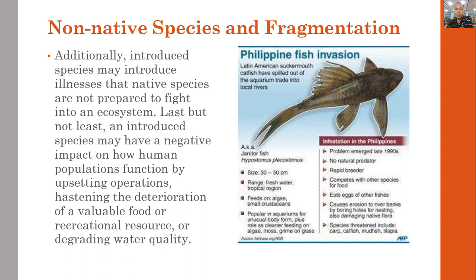Additionally, introduced species carry illnesses that native species are not prepared for. An introduced species may also have a negative impact on human populations by upsetting operations, hastening the deterioration of valuable food and recreational resources, or degrading water quality — as in the case of the janitor fish.